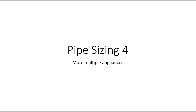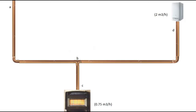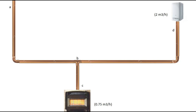Pipe sizing for multiple appliances. Here we have our system — it's got a gas fire and a boiler. We've already gone through the first section between A and B, and now we're going to look at the section between B and C. If we remove it, we can see that the only appliance that's going to be affected is the fire, so that's the only appliance we need to size.